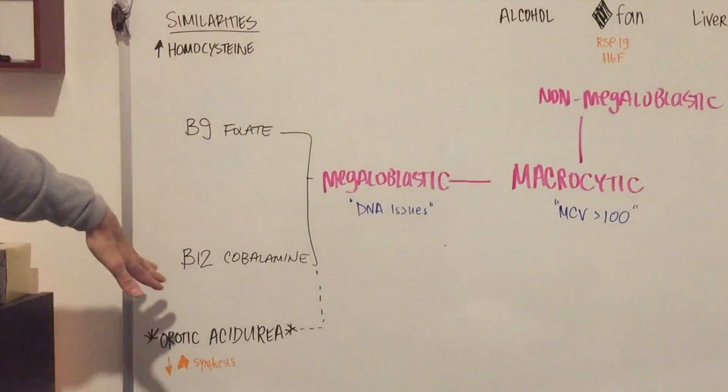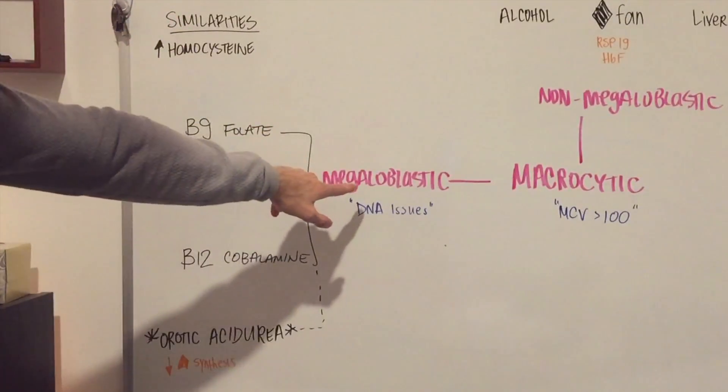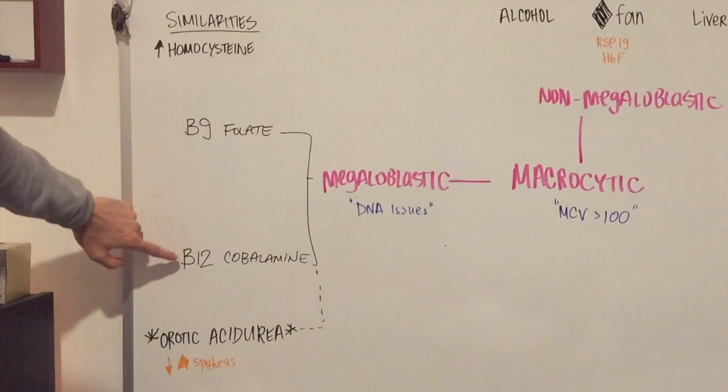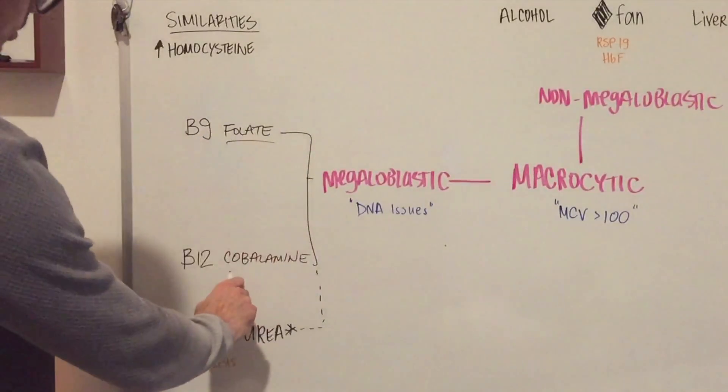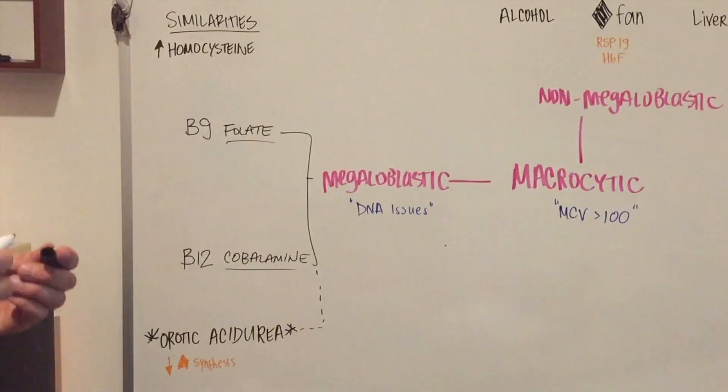So some few factors we need to go into first. The two main conditions for megaloblastic are going to be either B9 or B12. B9 is also called folate and B12 is also called cobalamin. So it can be interchanged on the exam.